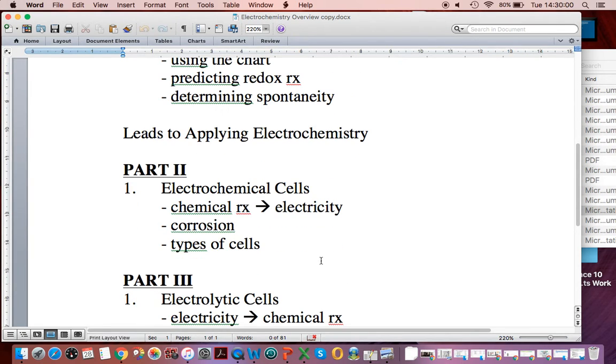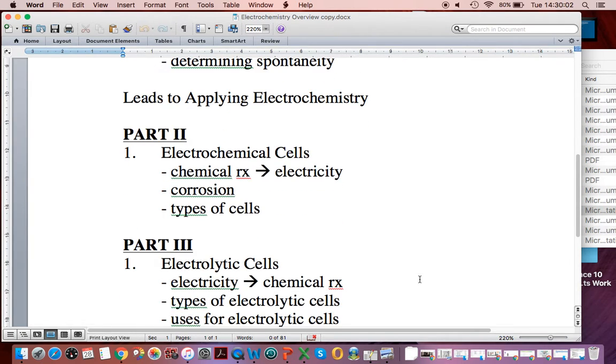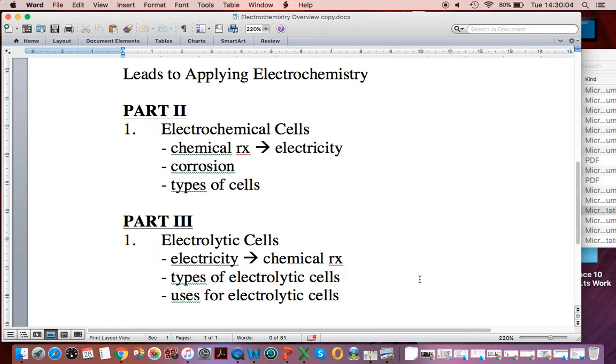And part three is the opposite of electrochemical cells. This is where we're going to use electricity to make reactions happen. So in part two, we're looking at what are called spontaneous reactions, reactions that happen. We don't have to do anything. Once they get going, they're going to make the energy we want.